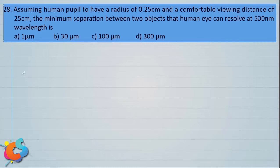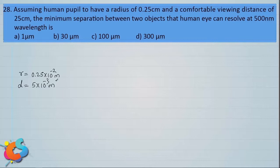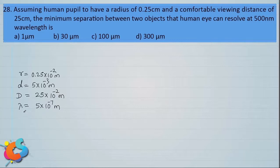Let's write down the data first. The radius of the pupil is given to be 0.25 cm, but for a human eye or telescope, more than the radius, what is important is the diameter. So the diameter is twice the radius, that is 0.5 cm or 5 mm, which is 5 × 10⁻³ meter. The distance of comfortable viewing — the least distance of distinct vision — is capital D = 25 cm. The wavelength of light used is 500 nanometer, or 5 × 10⁻⁷ meter. We need to find the distance X between two point objects that are just resolved, i.e., just seen separately.